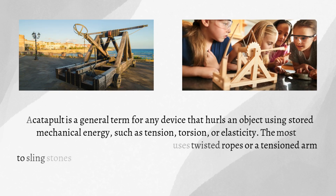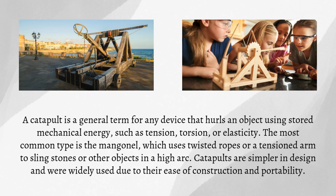A catapult is a general term for any device that hurls an object using stored mechanical energy, such as tension, torsion, or elasticity. The most common type is the mangonel, which uses twisted ropes or a tensioned arm to sling stones or other objects in a high arc. Catapults are simpler in design and were widely used due to their ease of construction and portability.